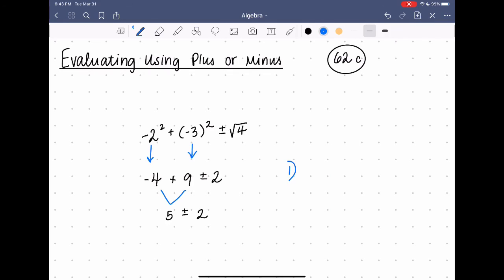Answer 1, I'll add them, 5 plus 2, and get 7. Answer 2, I'll subtract them, 5 minus 2, and get 3.